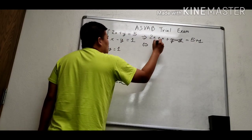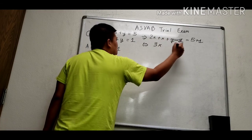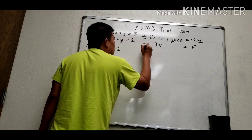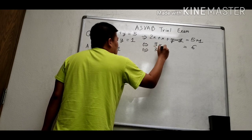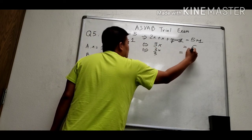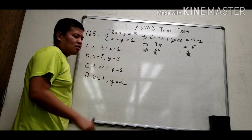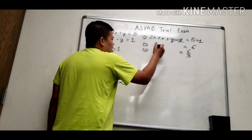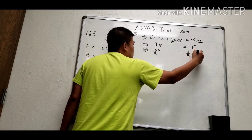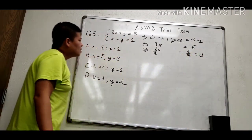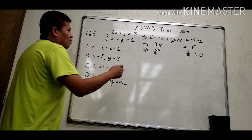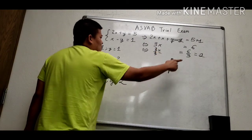So we get 3x equals 6. We divide both sides by 3, eliminating the 3. 6 divided by 3 equals 2, so we find x equals 2.